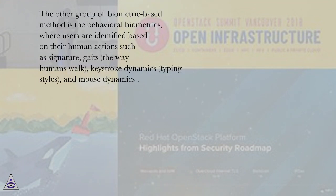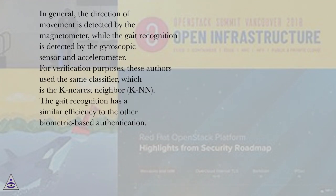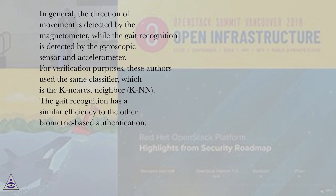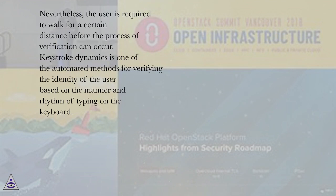The other group of biometric-based methods is behavioral biometrics, where users are identified based on their actions such as signature, gaits (the way humans walk), keystroke dynamics, typing styles, and mouse dynamics. In general, the direction of movement is detected by the magnetometer, while gait recognition is detected by the gyroscopic sensor and accelerometer. For verification purposes, the K-nearest neighbor (K-NN) classifier is used. The gait recognition has similar efficiency to other biometric-based authentication; nevertheless, the user is required to walk a certain distance before verification can occur.